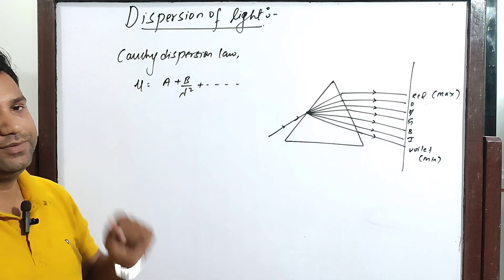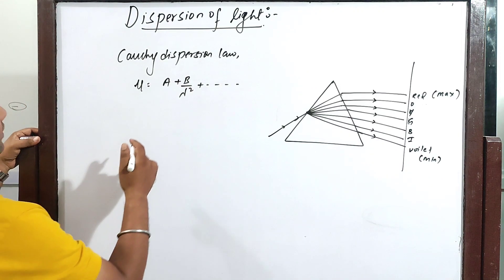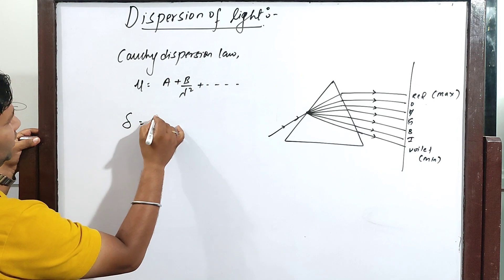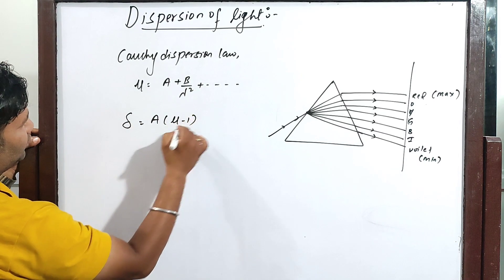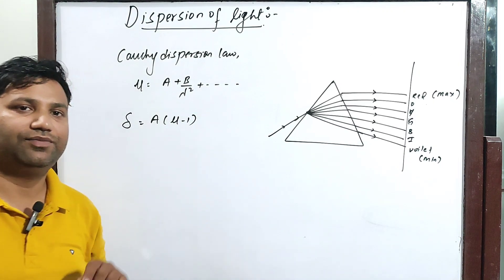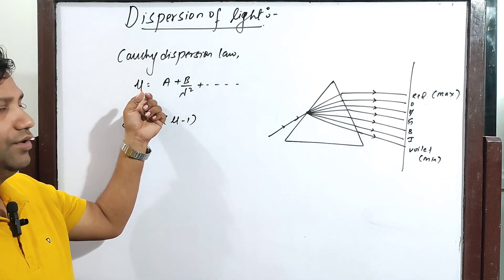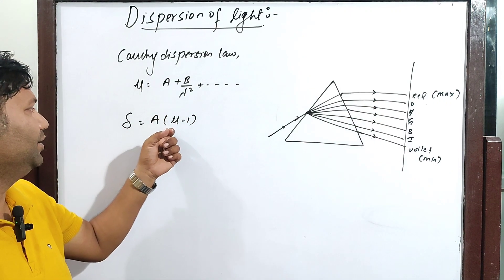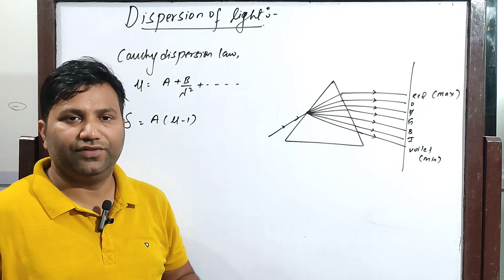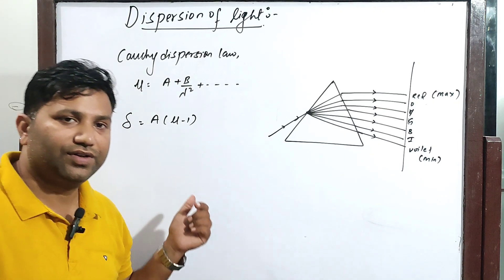For a small angle prism we have the deviation formula: delta equals (mu minus 1) times A, where A is the angle of the prism and mu is the refractive index of the material. Since mu varies with lambda for each color, all the colors of light have different refractive indices and hence different deviations.